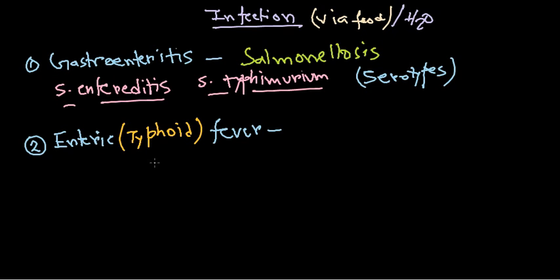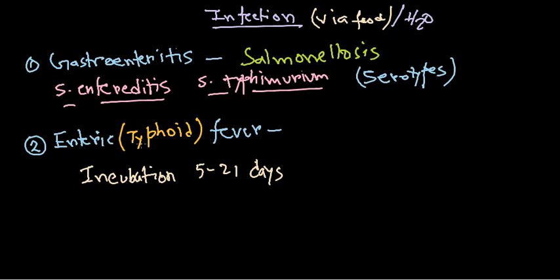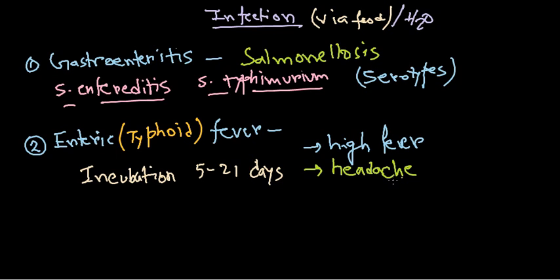The second type of disease Salmonella causes is enteric fever, also called typhoid fever. This is severe and life-threatening, characterized by illness, fever, headache, abdominal cramps, as well as non-specific symptoms like sweats, vomiting, cough, and diarrhea.